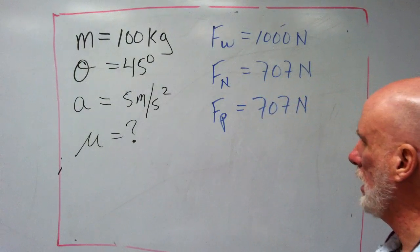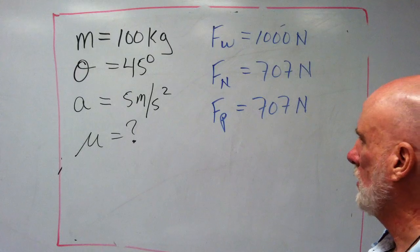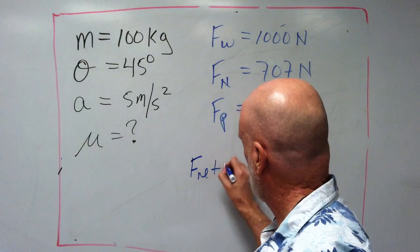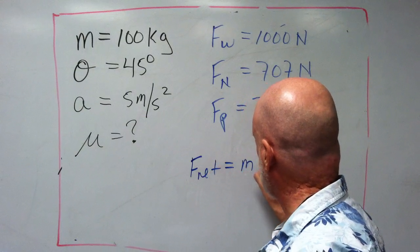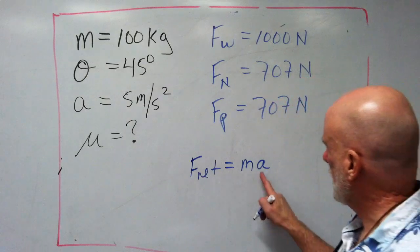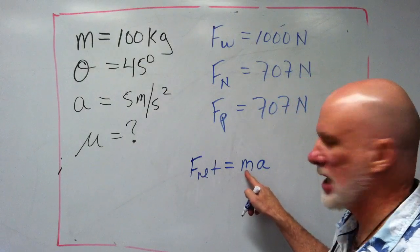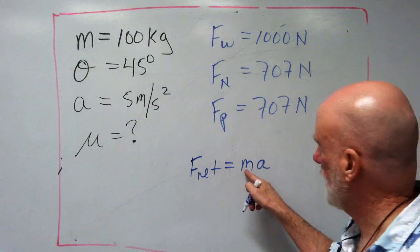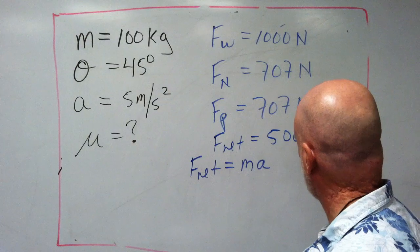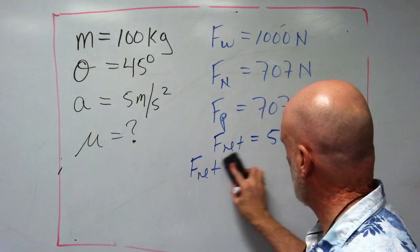Now, we know that, we know that Fnet is going to equal the mass times the acceleration. So, it's 5 times 100. Yep. 5 times 100. So, Fnet equals 500 newtons.